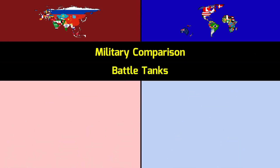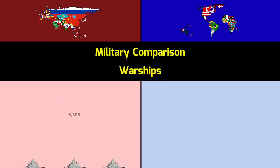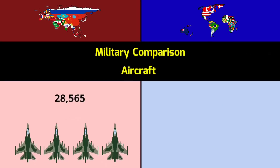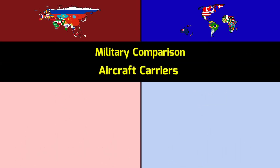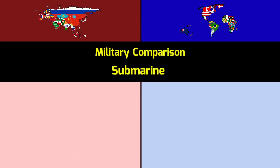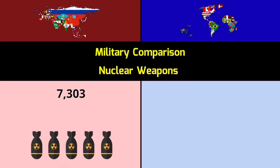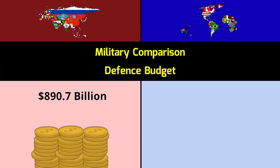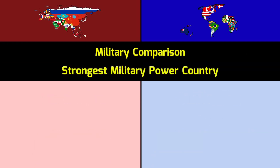Battle tanks: Asia 79,931 vs Rest of World 23,653. Warships: 6,306 vs 2,880. Aircraft: 28,565 vs 2,388 for Asia. Aircraft carriers: Asia 10 vs Rest of World 11. Submarines: Asia 469 vs 416; total 931. Nuclear weapons: Asia 7,303 vs Rest of World 5,830. Defense budget: Asia $890.7 billion vs Rest of World $1.10 trillion.